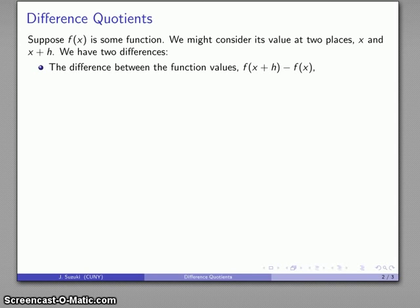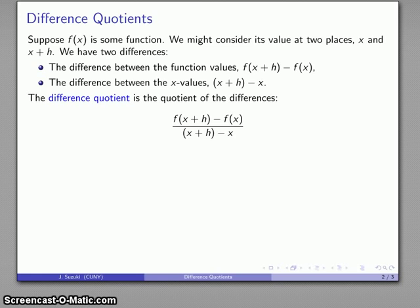First off, we can talk about the difference between the function values, and this difference is just the change in our function from x to x plus h. So this is just the change in the function value. And then we also have the difference between the x values where we end up, x plus h, and where we started, x. And once we have these two changes, we can talk about the ratio of change, the rate of change, which is the quotient between the two, and it's going to be what our difference quotient is.